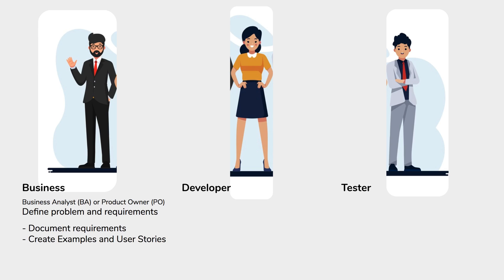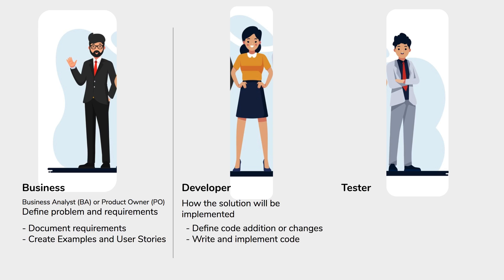Then we have the developer or the development team representative. The developer decides on the technical solution, how it will be implemented, and defines the code additions or changes. Finally, the development team writes and implements the code.